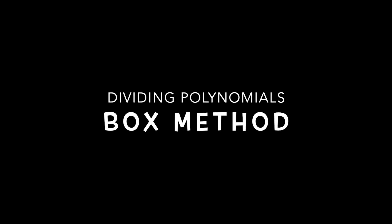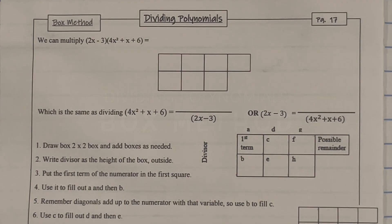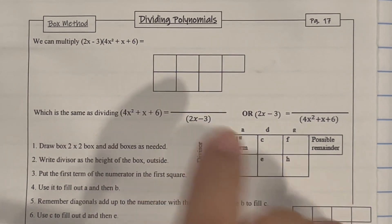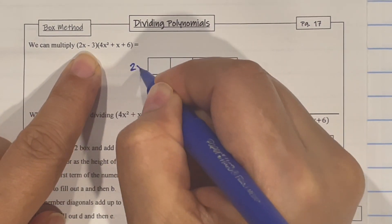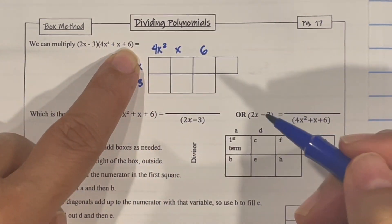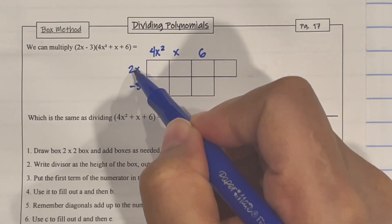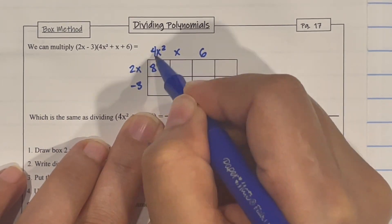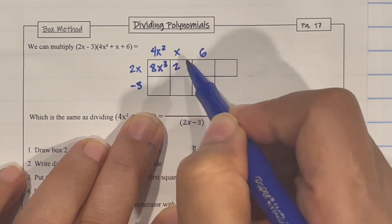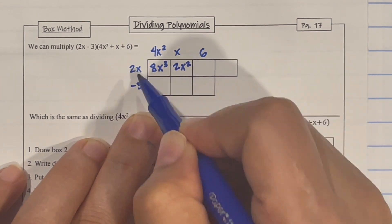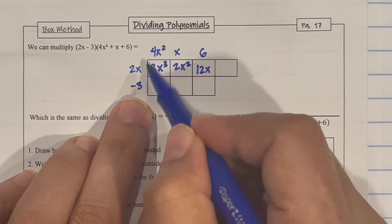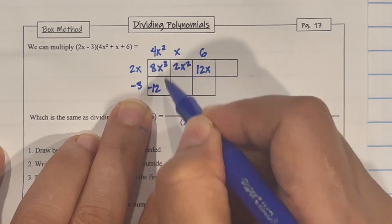We're going to take a look at dividing polynomials using the box method. To understand how to divide, you have to know how to multiply. Put 2x minus 3 as the height and the second factor as the row. Multiplying those boxes gives 8x cubed — 2 times x times x is x squared, 2 times 6 is 12, and negative 3 times 4 is negative 12.